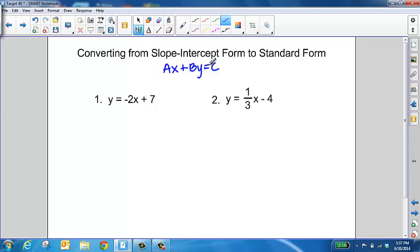That means we want to have both the terms that have an x and a y on the left-hand side of the equal sign and the constant on the right-hand side.